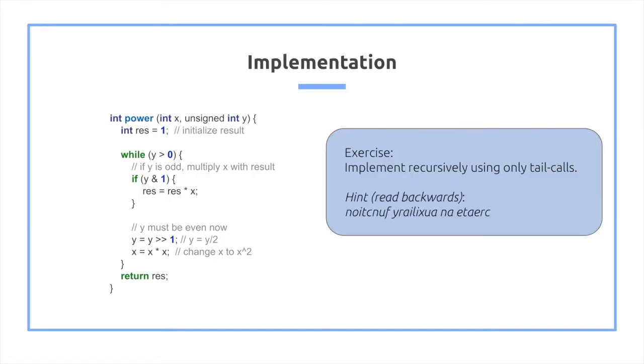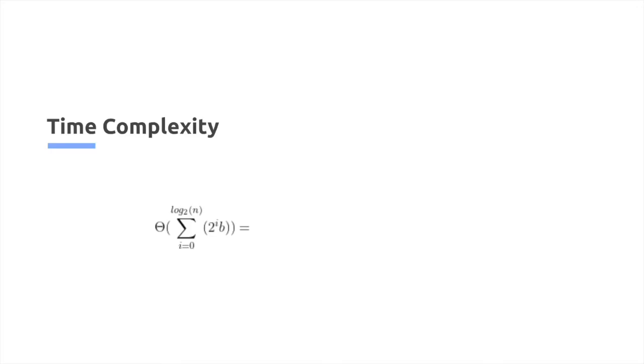What is the time complexity of this? We do a summation from i equals 0 to log base 2 of n, 2 to the i, b. Then we take the b out and afterwards we get, using geometric series,